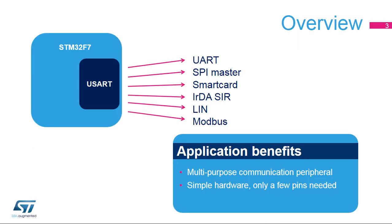The USART is a very flexible serial interface that supports asynchronous UART communication, SPI or Serial Peripheral Interface Master Mode, and LIN or Local Interconnect Network Mode. It can also interface with ISO IEC 7816 smart cards and IRDA devices. It also provides certain features that are useful when implementing Modbus communications. Applications making use of the USART benefit from easy and inexpensive communication between devices, which only requires a few pins.